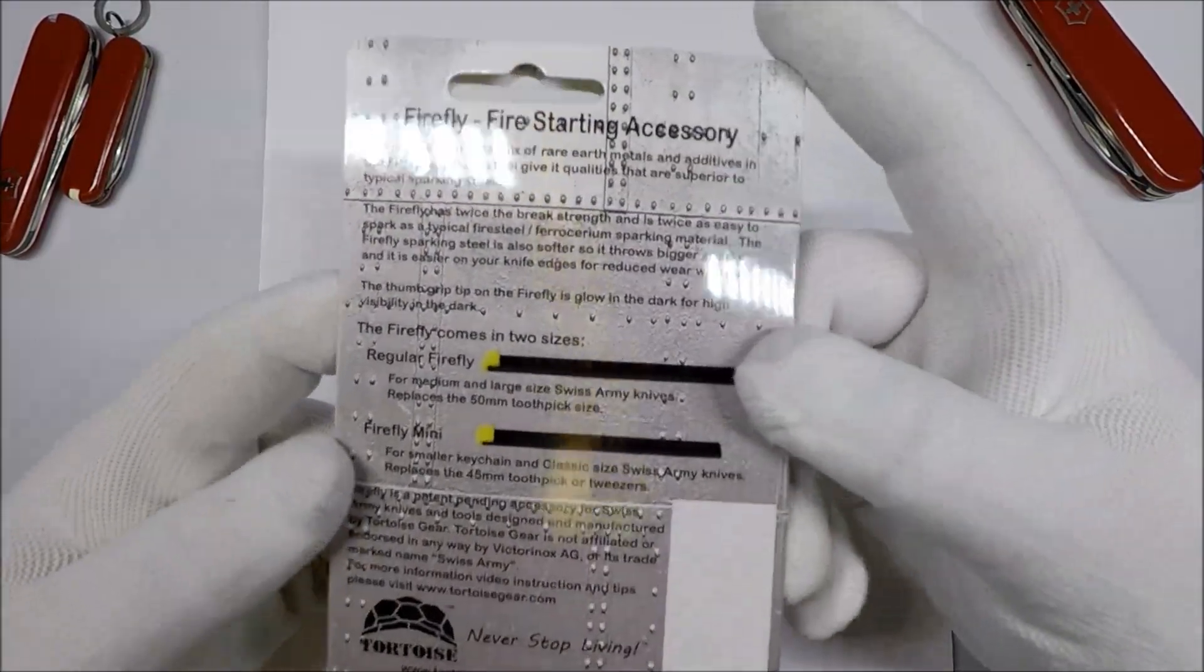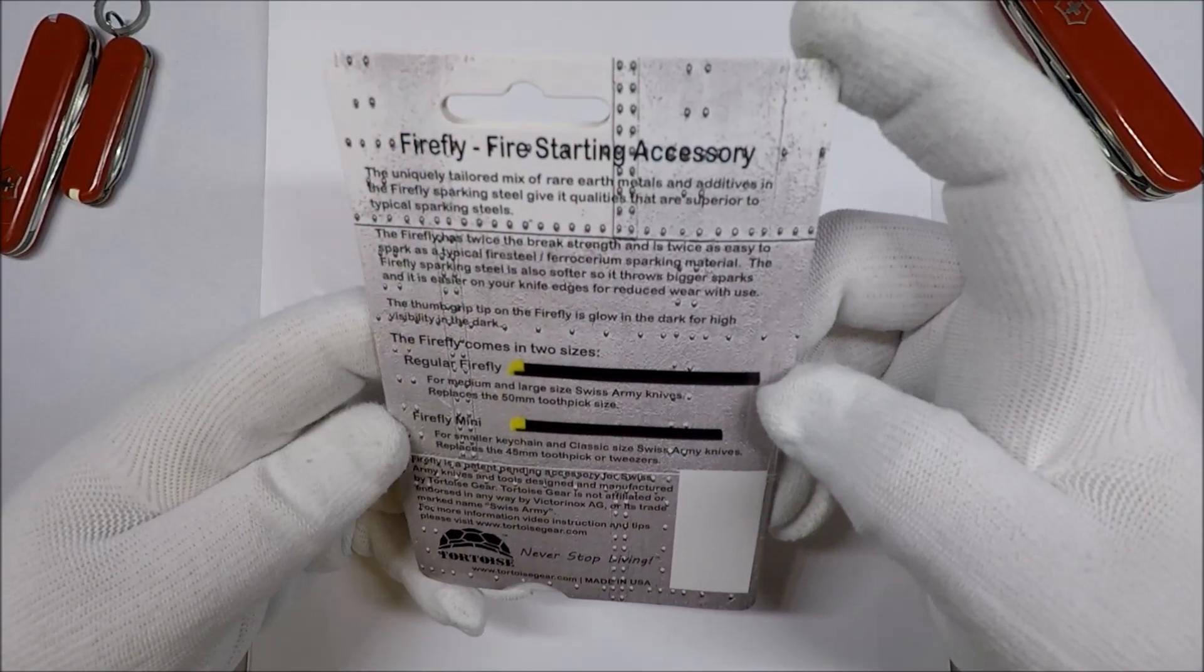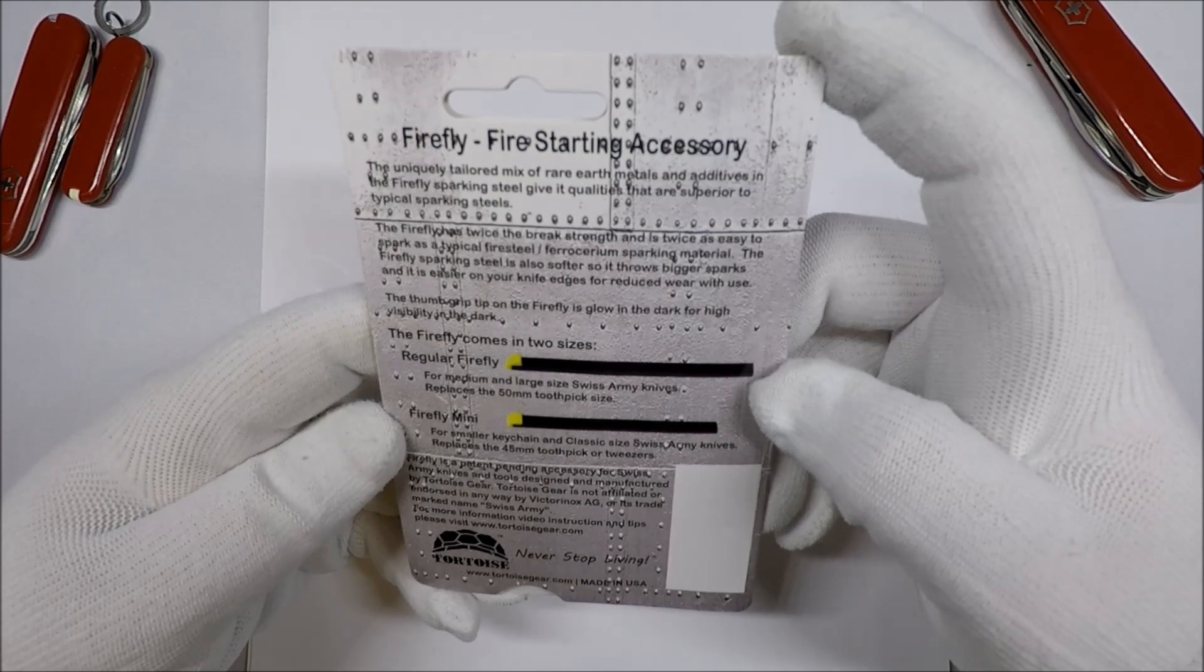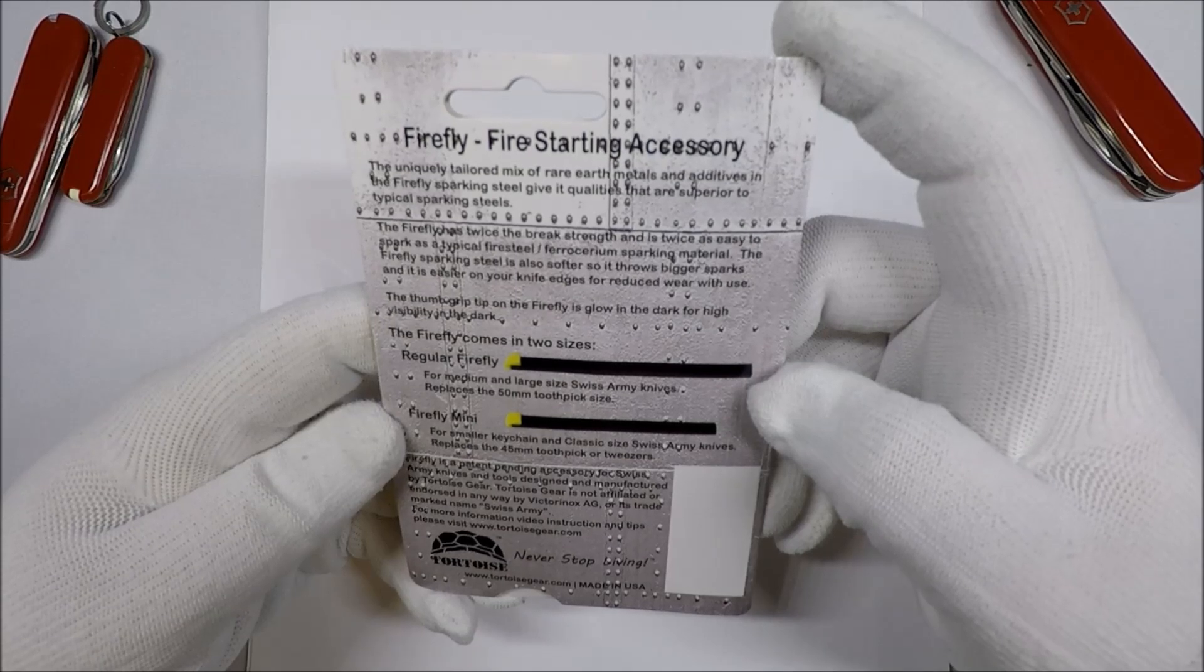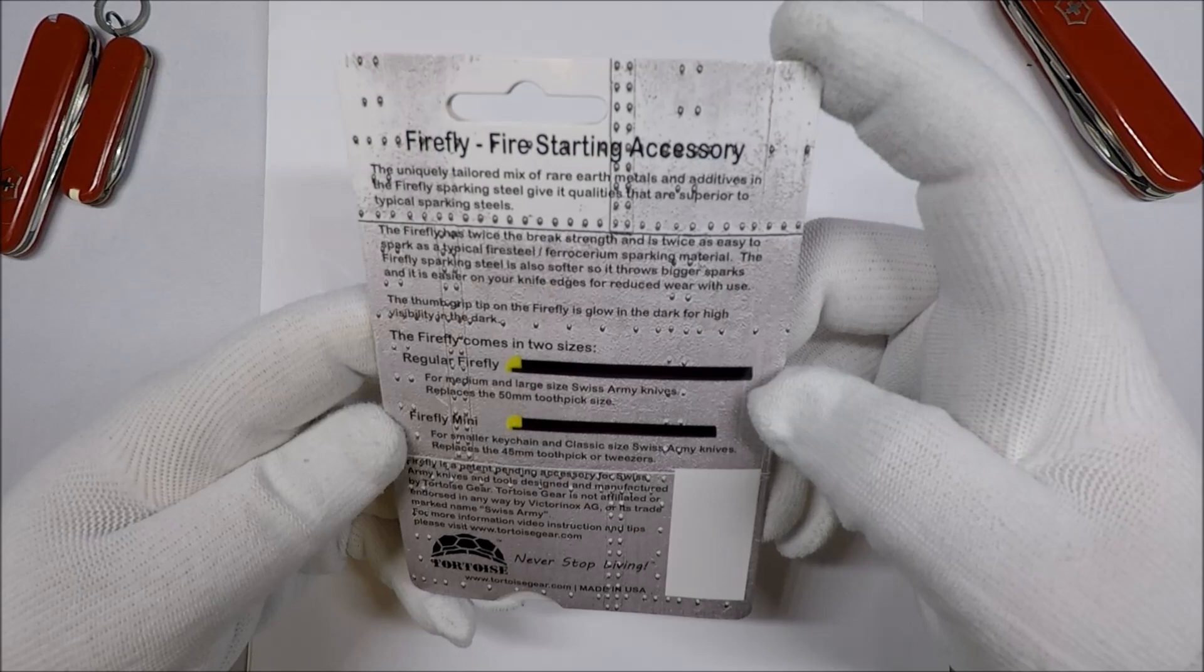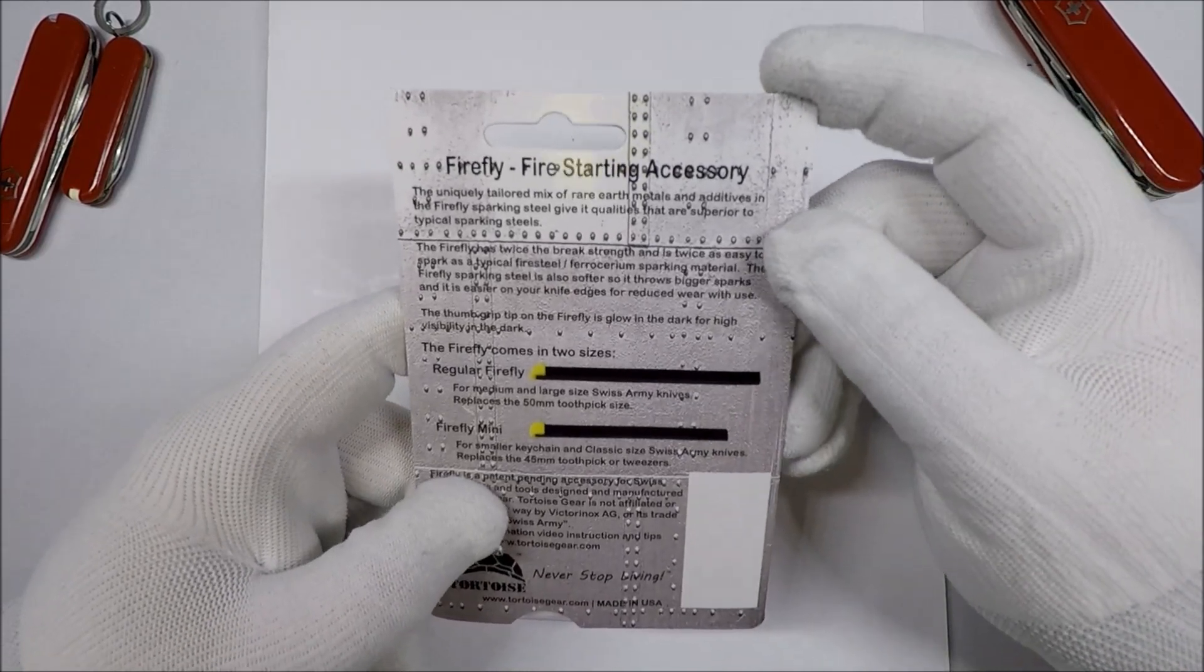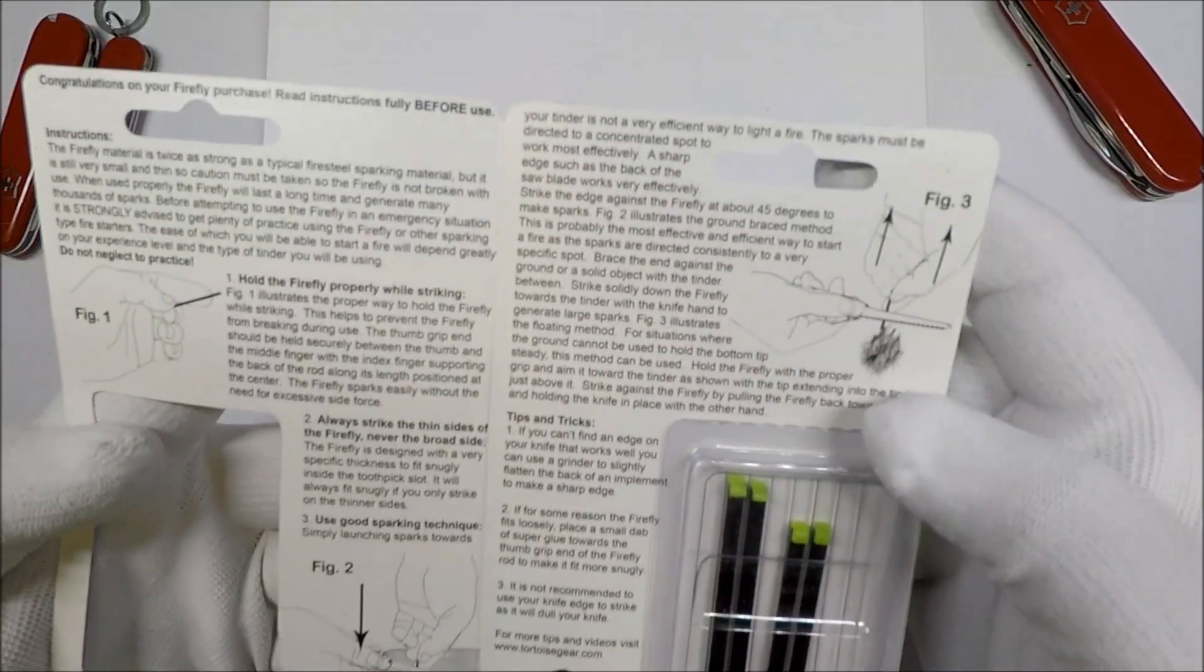Let's see if there's anything particularly exciting on the packaging. Uniquely tailored mix of rare earth metals and additives, quality superior striking steels, twice the break strength and twice as easy to spark as a typical fire steel. The Firefly sparking material is also softer, so it throws bigger sparks. The thumb grip is glow-in-the-dark for high visibility and comes in two sizes. Let's check this thing out.